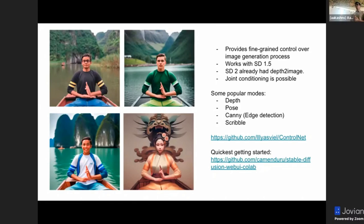The way to control these is through different kinds of models, which are being trained via the ControlNet method. So you can work with depth, you can work with pose, you can work with edge detection, and you can also work with scribble. The base idea is that it provides very fine-grained control over the generation process. And the advantage of ControlNet is that this works for stable diffusion 1.5 models as well.